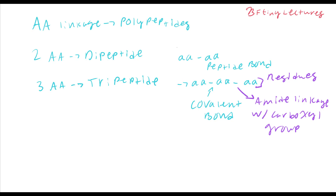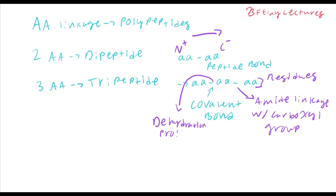If you want to talk about direction, more specifically for this class, this is the N-terminus (positive) and this is going to be the C-terminus (negative). You read it from left to right — from positive to negative like a battery. This bond is actually formed through a dehydration process, meaning you remove water — one H2O.